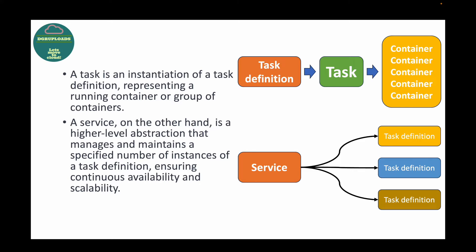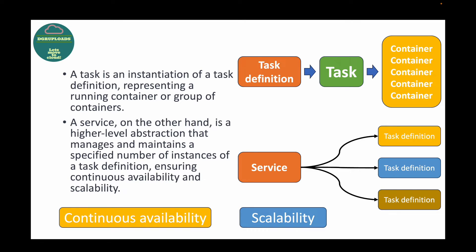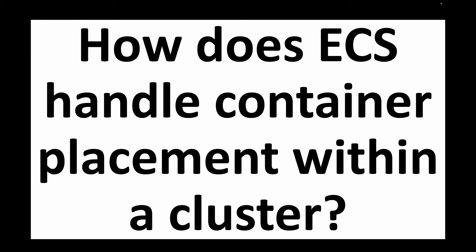A service is a higher-level abstraction which helps us manage and maintain a specified number of instances of your task definition. This ensures continuous availability and scalability of your containers to make sure your application is highly available. So to summarize: a task is simply your container — the application you are running — and a service is your collection of tasks. If you want to run multiple tasks and maintain a specified number, you make use of a service.